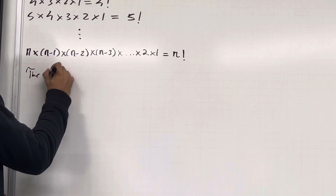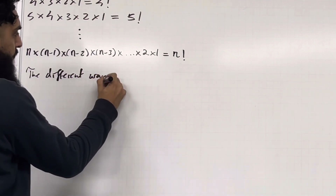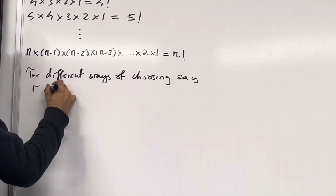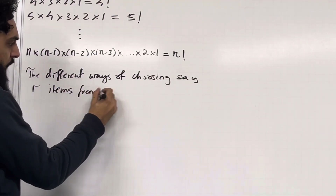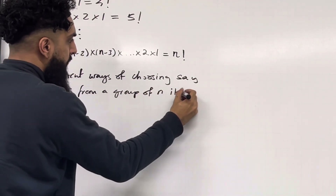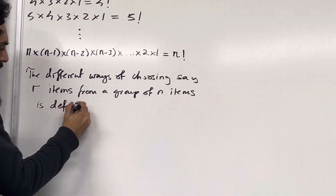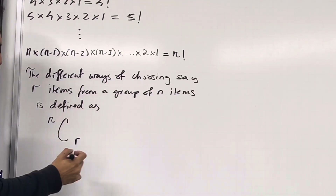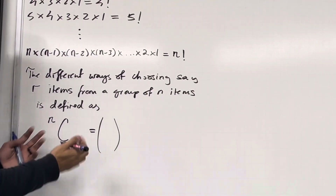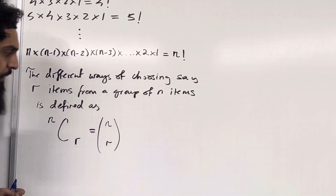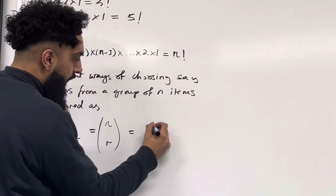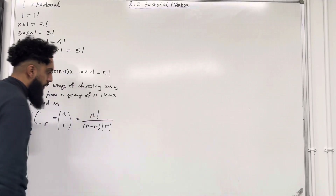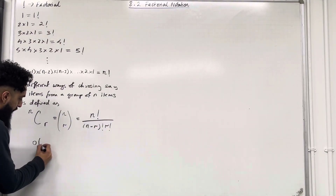The number of different ways of choosing R items from a group of n items is defined as nCr — that means n choose r. nCr can also be written with n at the top and r at the bottom in brackets. The formula to calculate this is n factorial divided by (n minus r) factorial times r factorial. A key fact is that 0 factorial is equal to 1.